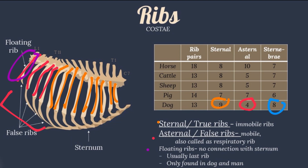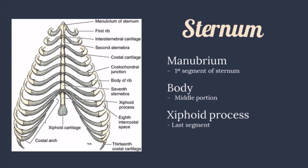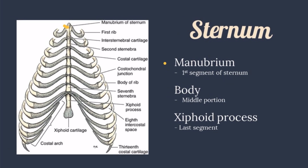For the sternum, it forms the ventrum of the bony thorax and gives attachment to the costal cartilage of the ribs, as well as providing a bony origin for the pectoral muscles. The sternum consists of individual bones called sternebrae that tend to fuse as age advances. The manubrium is the first segment of the sternum. The body is the middle portion. The xiphoid process is the last segment and holds the xiphoid cartilage.